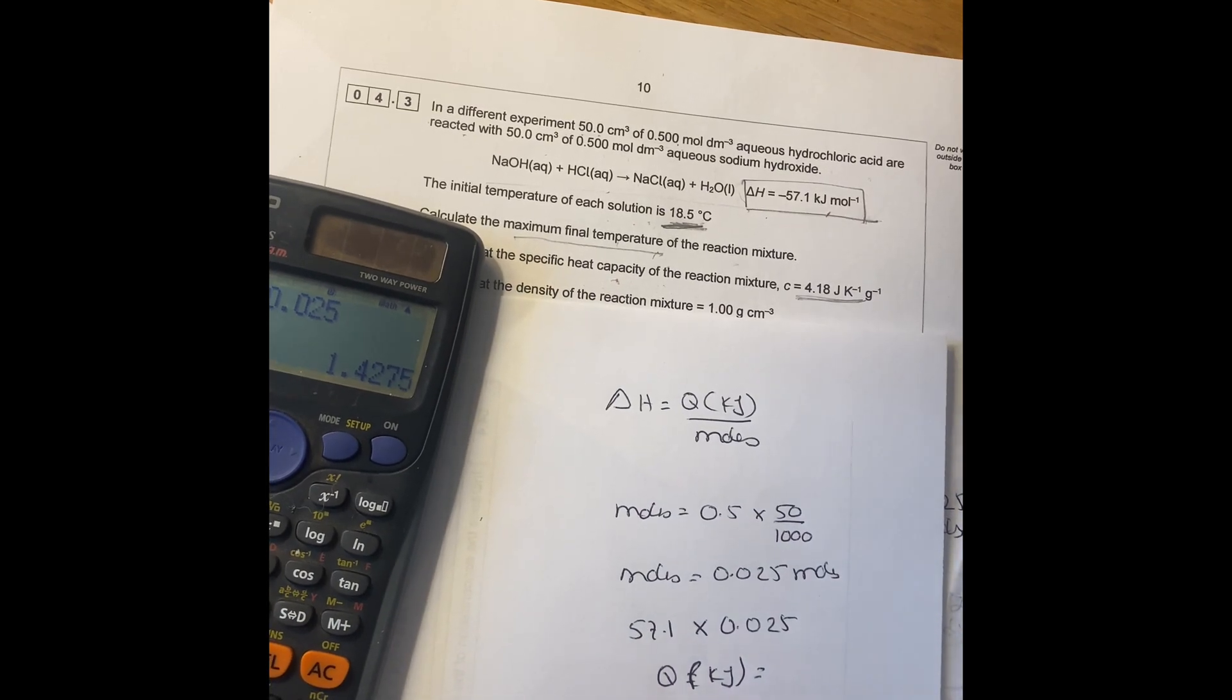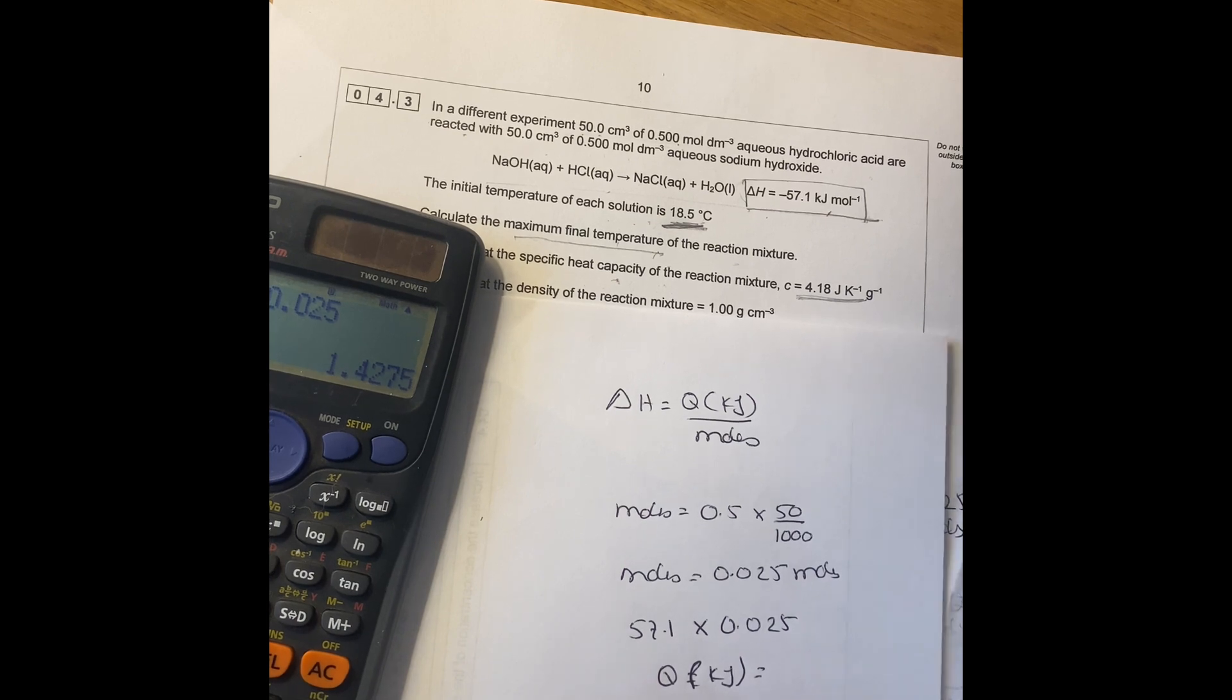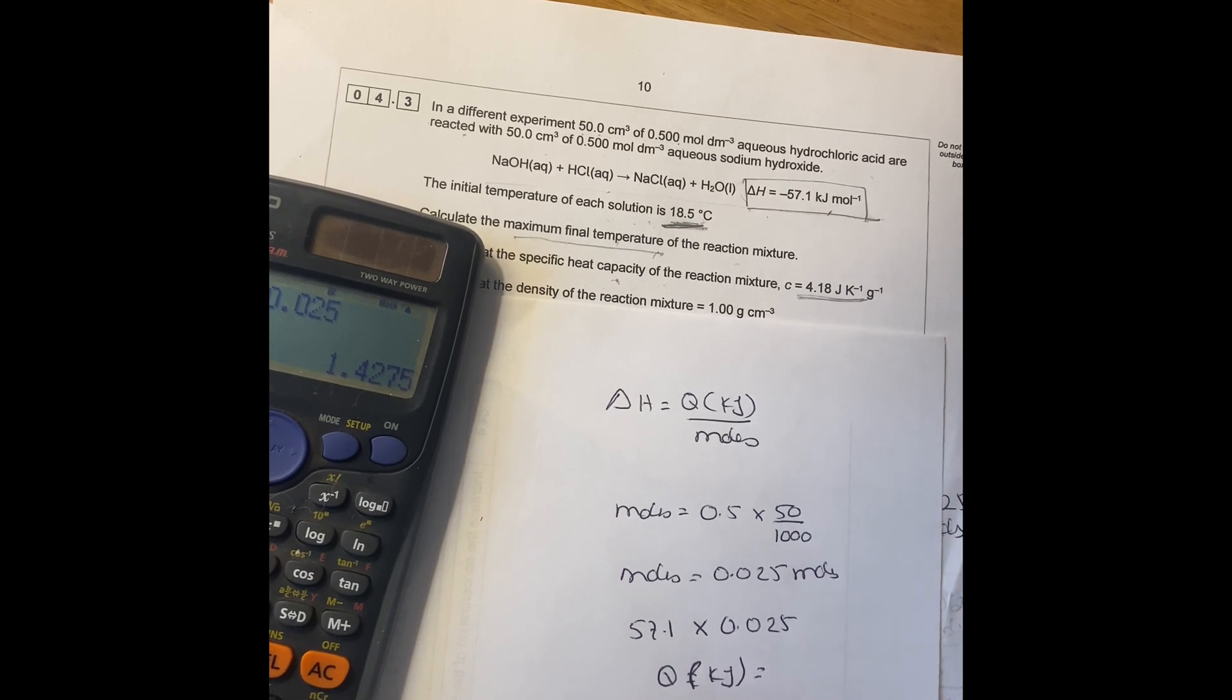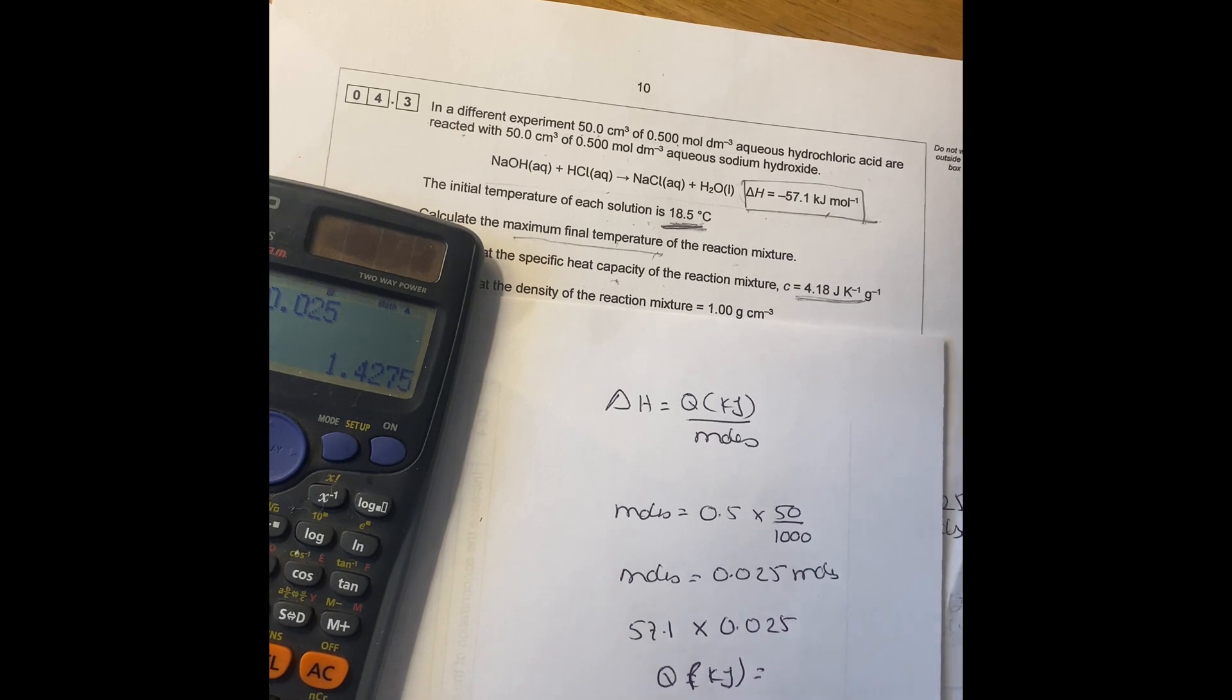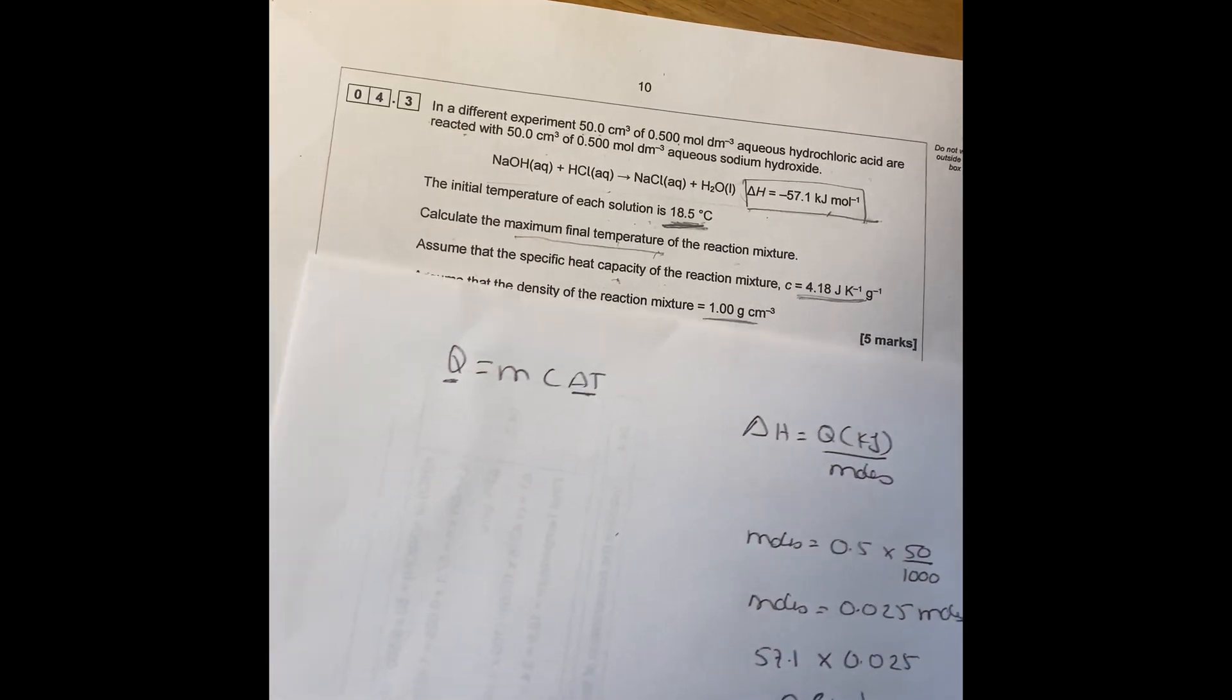So to change to joules you multiply by a thousand. So if you multiply by a thousand it gives you 1427.5 joules. Once you have your Q you can plug it in this equation.